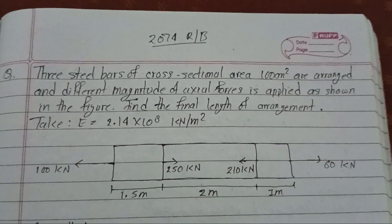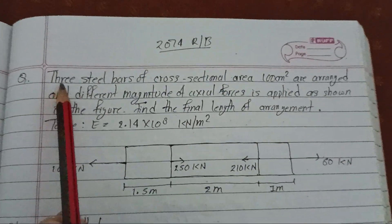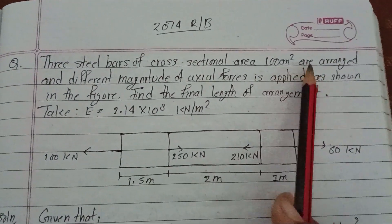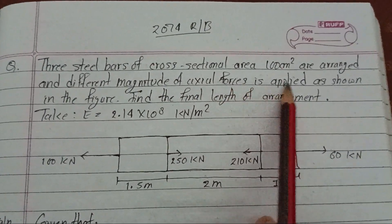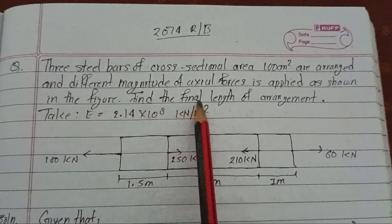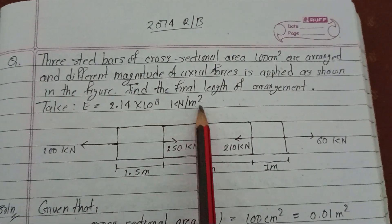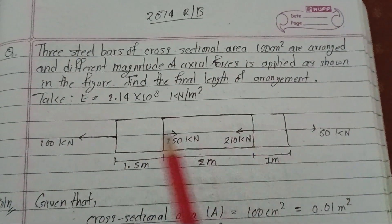Now let's take a look at our question. Three steel bars of cross-sectional area are arranged and different magnitude of axial forces are applied as shown in the figure. Find the final length of the arrangement. Take E equals 2.14 into 10 to the power 8 kilonewton per meter square.